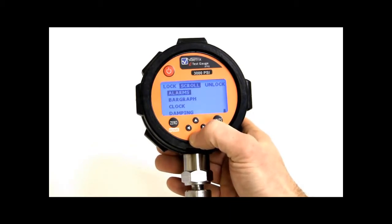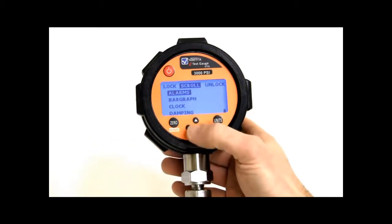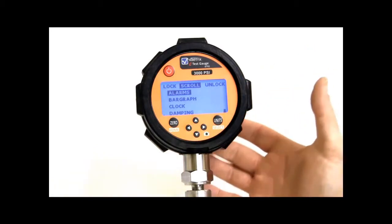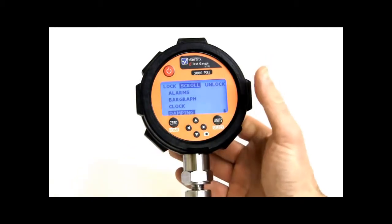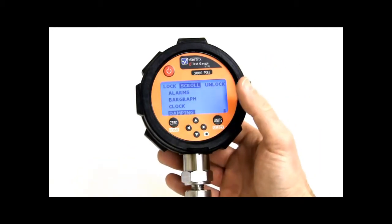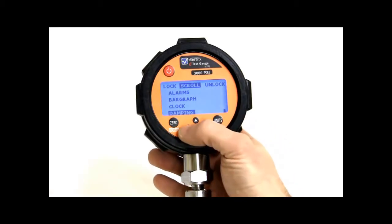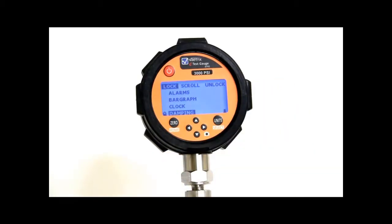Or to make it easier to use, I can lock out basically everything here and just be able to read just pressure. So you can go through, say I didn't want the dampening. I wanted to lock that out from a user that didn't want to use dampening. So I can go over and lock that out. So that will not appear, they will not be able to get into that particular feature. Unless they use that password that we went over earlier, which was 2017.